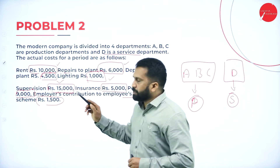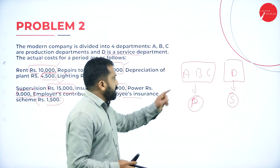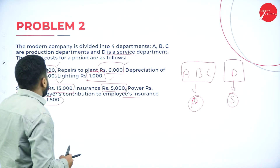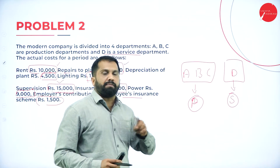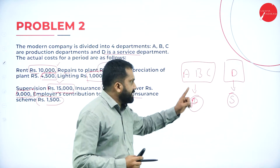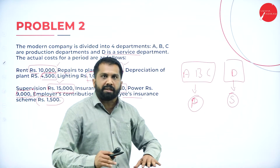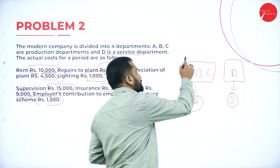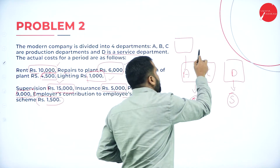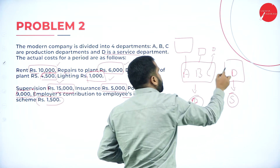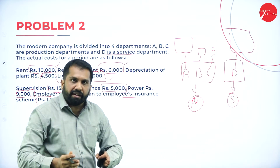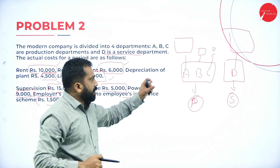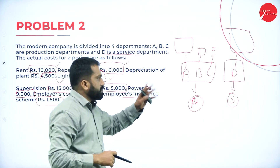Now, these 8 expenses are paid by 4 departments. How much should each department pay? For example, rent is 10,000 — how much should A pay, B pay, C pay, and D pay? You cannot divide equally, because each department occupies a different amount of space. According to the area usage, we are supposed to do the calculation.